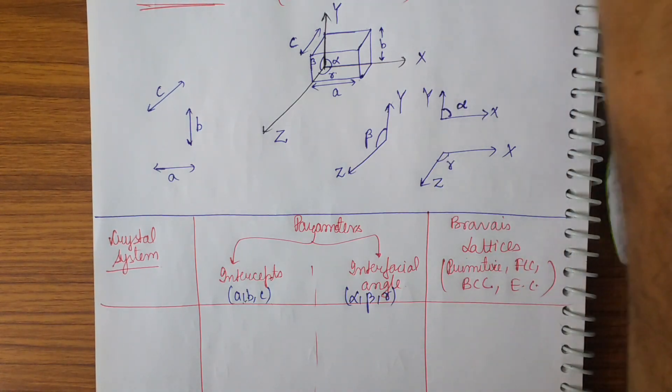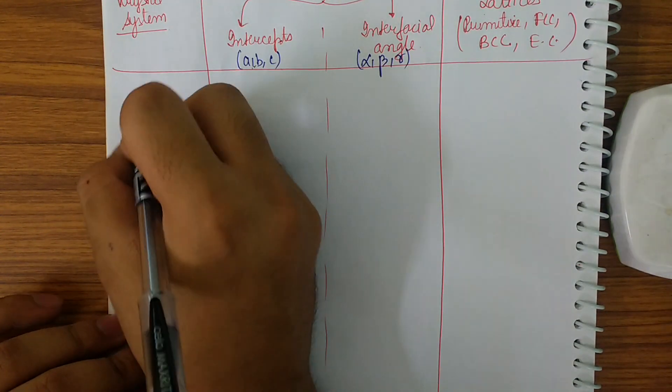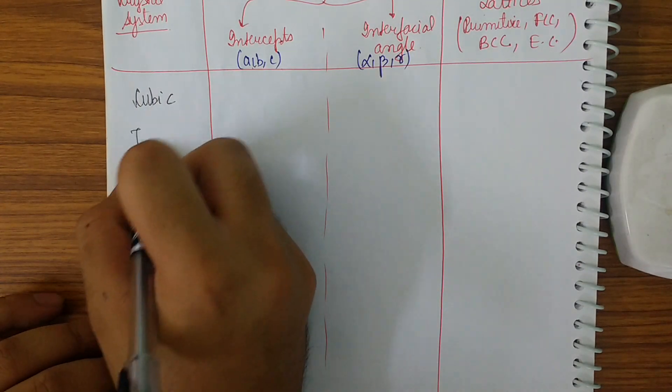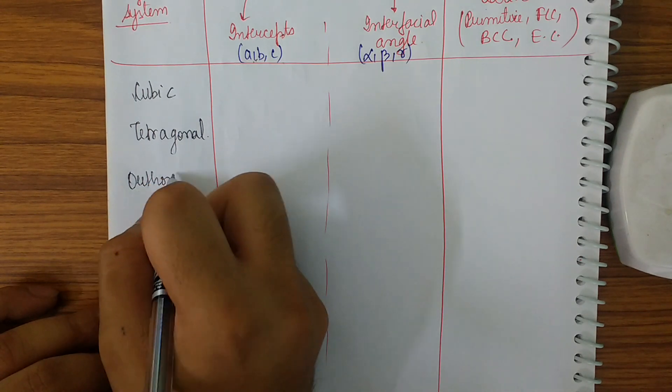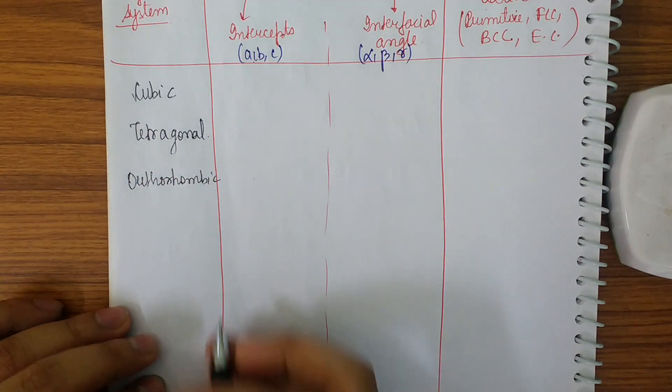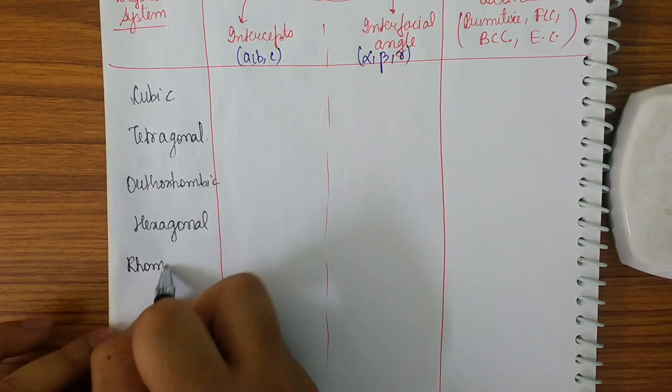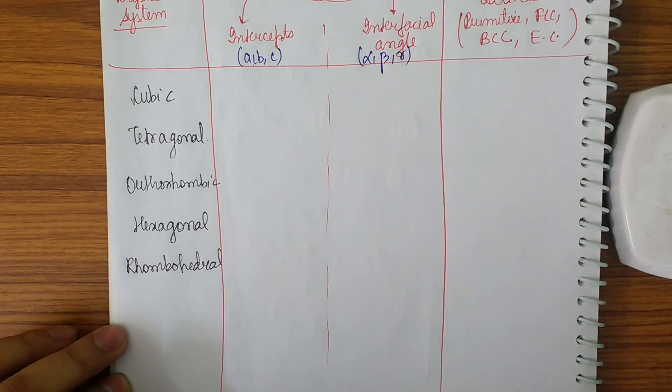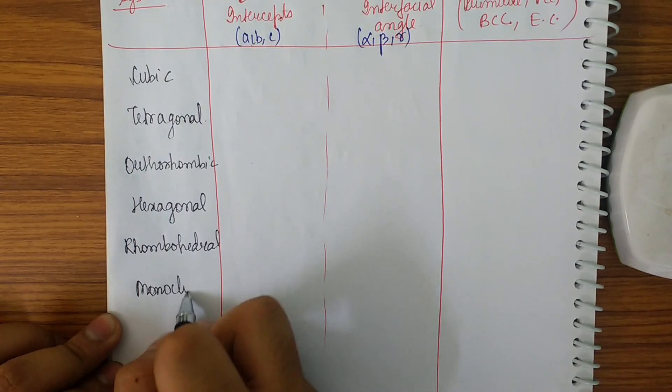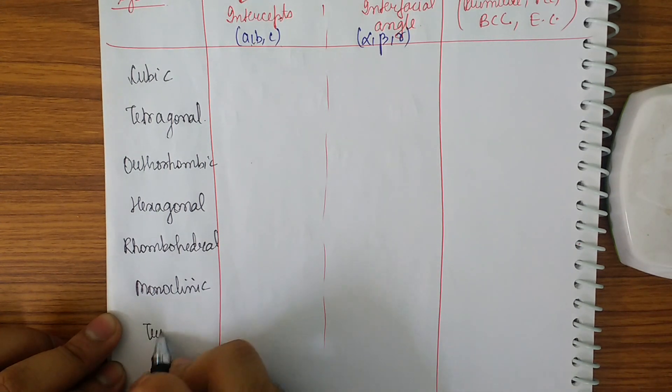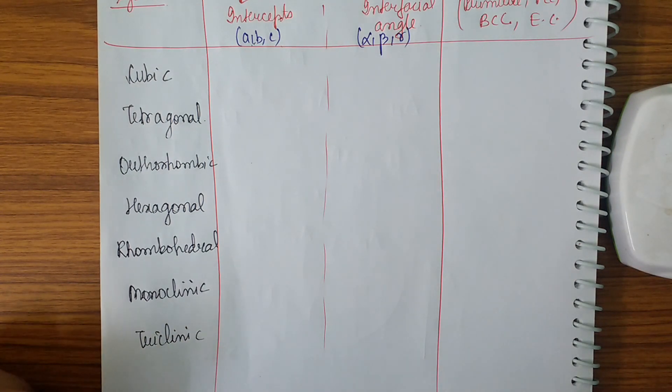Now let me begin with the basics. First of all let's discuss the names with the help of the parameters. First we take the cubic system, then the tetragonal system. Next is orthorhombic. I shall tell you a way to remember all of them. Next is hexagonal. The next one is rhombohedral, also called trigonal in some books but I will go according to the NCERT. Next is monoclinic. This topic is very important because some questions can be asked from it because it is of cramming type nature. The last one is triclinic.